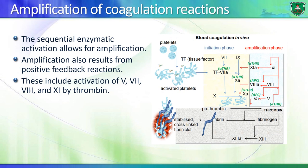Now we're really getting to the climax of the symphony. There is feedback activation: thrombin acts back on all of these factors - it activates more factor 5, more factor 8, more factor 11, and it can also act on factor 7. So you have more amplification, more activation of all of these zymogens, specifically getting to factor 10, which activates more and more prothrombin to thrombin.